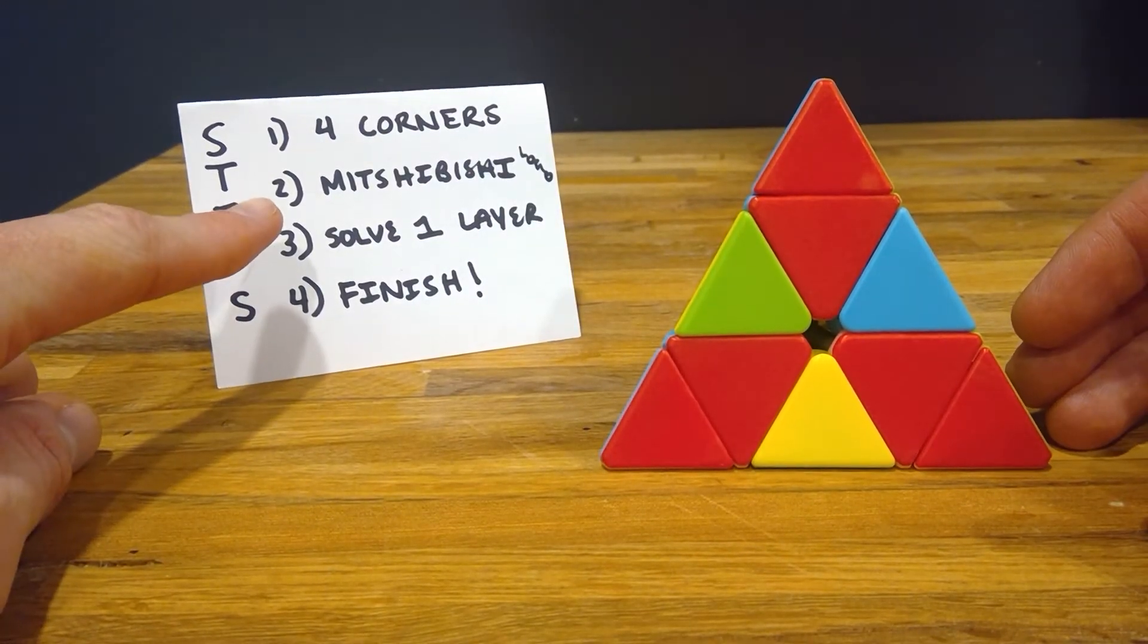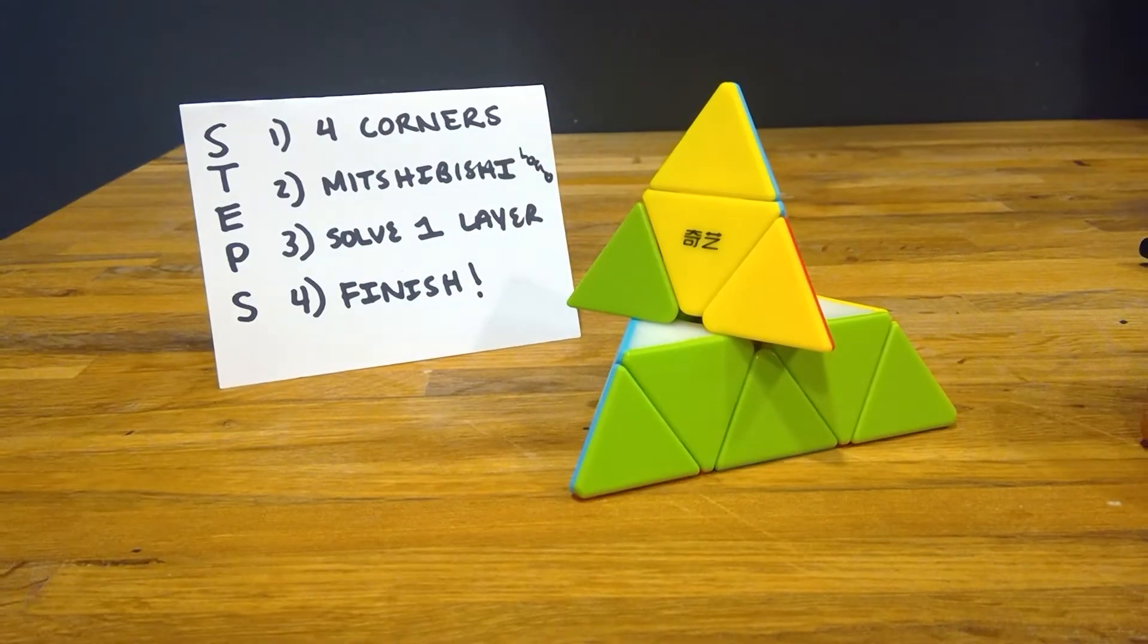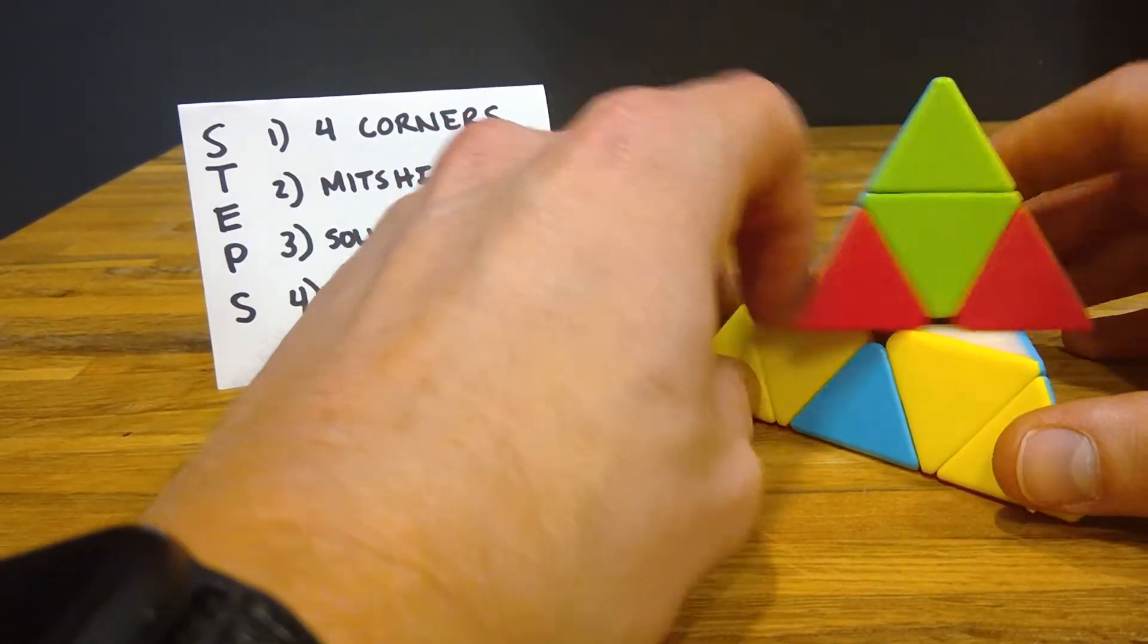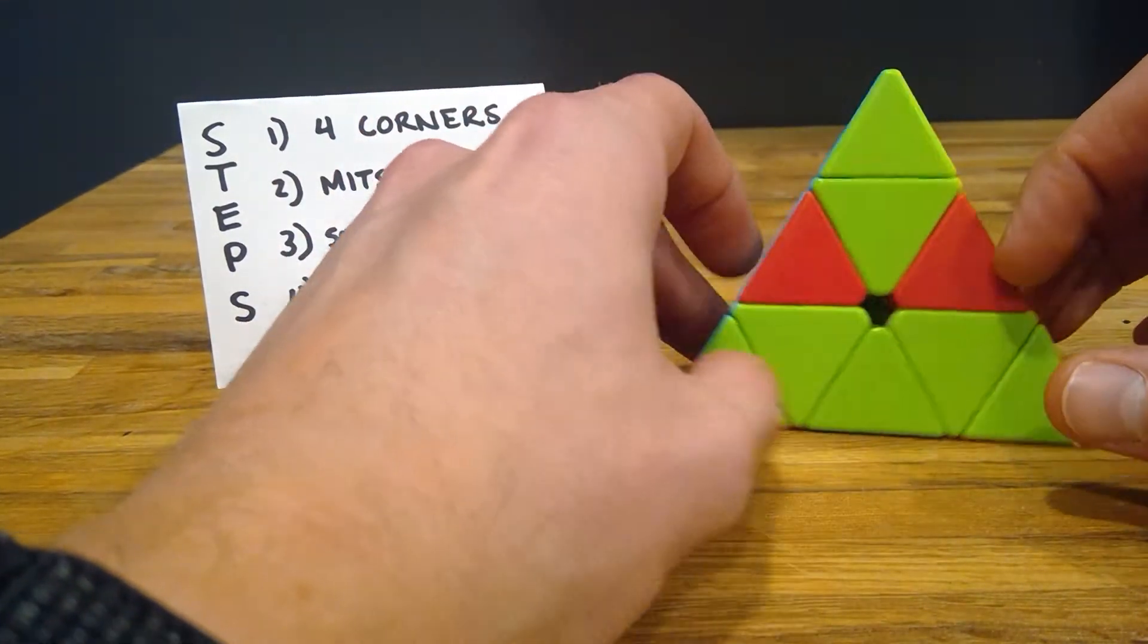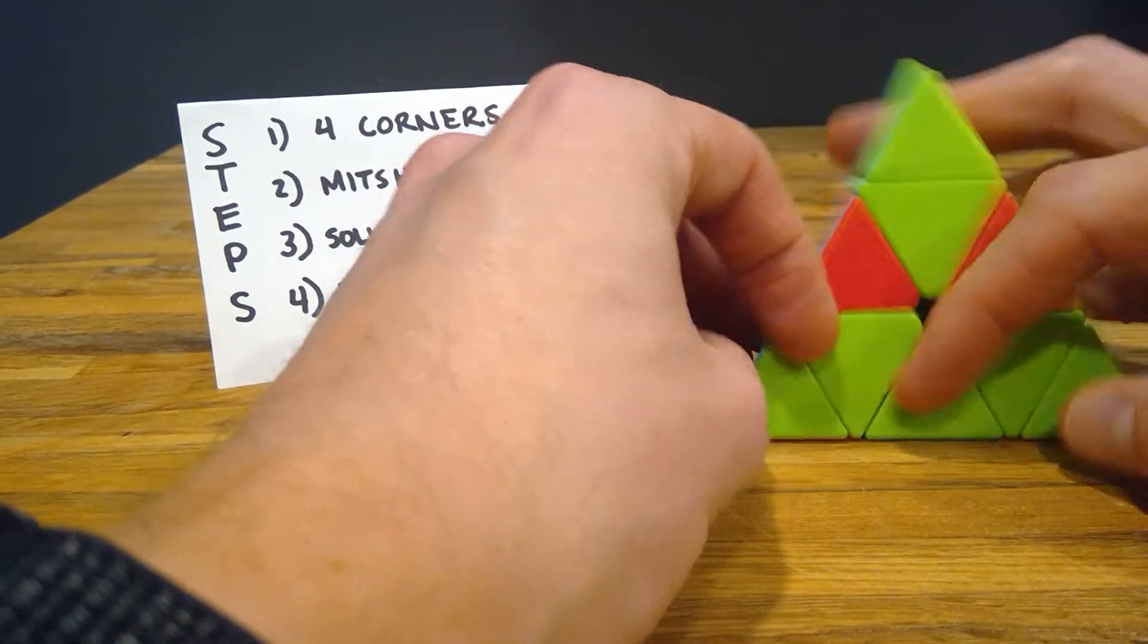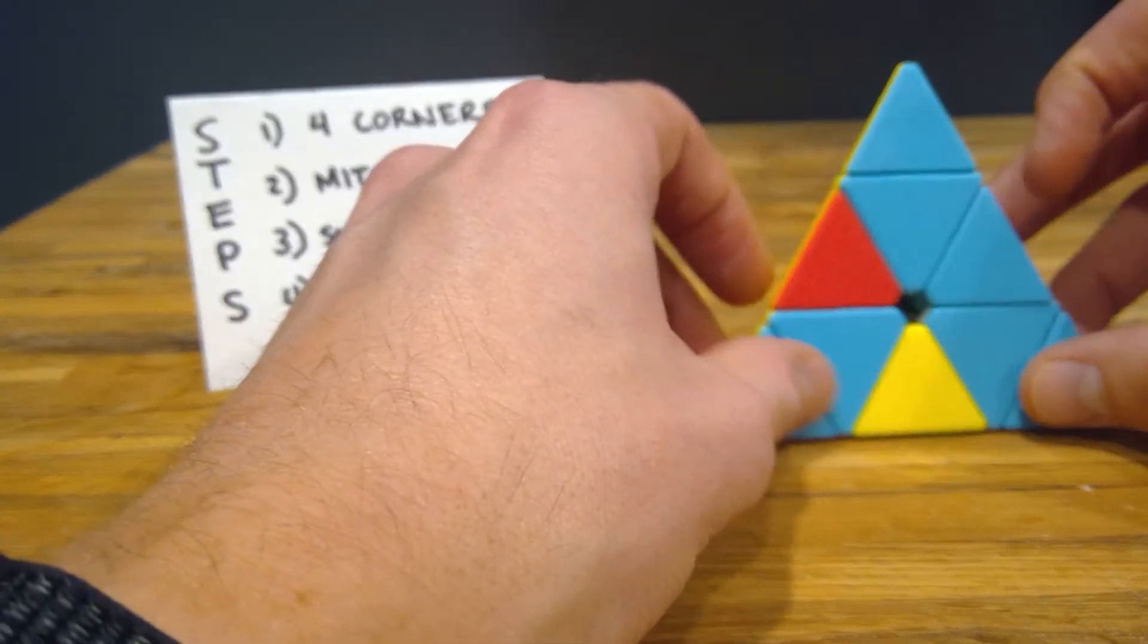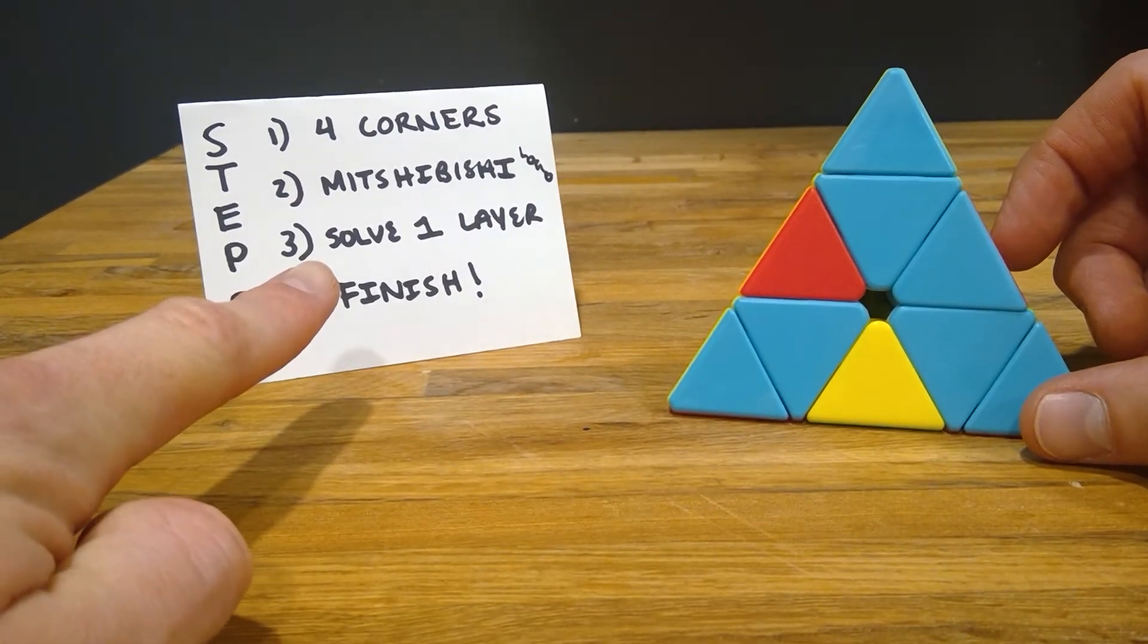Now step three. Moving on. Solve one layer. And like I said at the beginning of the video, this is a layer. This bottom section here. And we're going to try to solve this layer first. I should backtrack one second. Try to get your cube to where you have the Mitsubishi logo in every color. So, we have it in red. We have it in green. We have it in yellow. And we have it in blue. If you didn't, you just need to turn this one more time. So, make sure you have the Mitsubishi logo everywhere. And then, solve one layer.